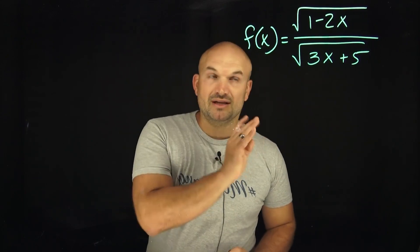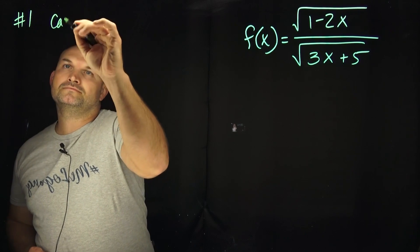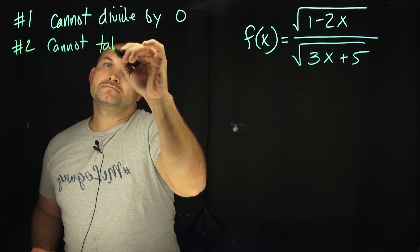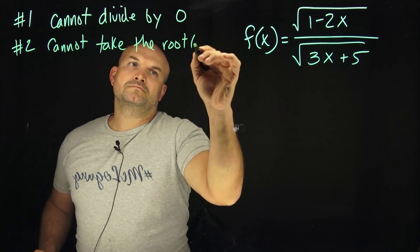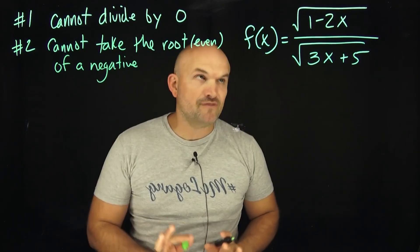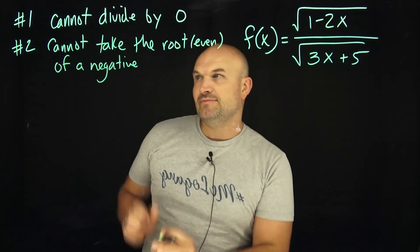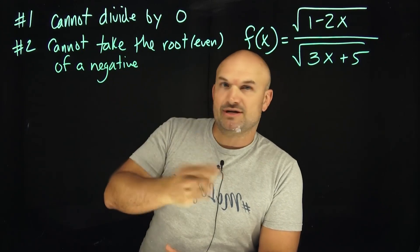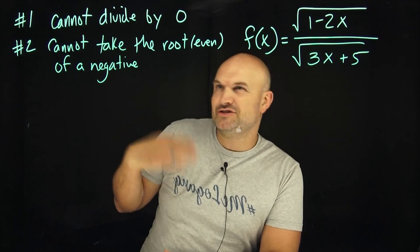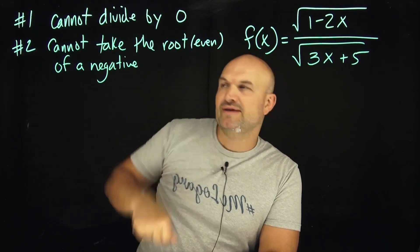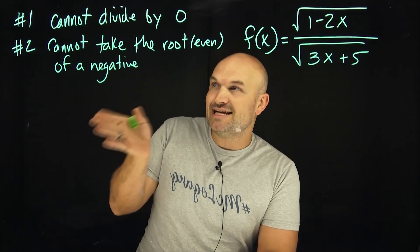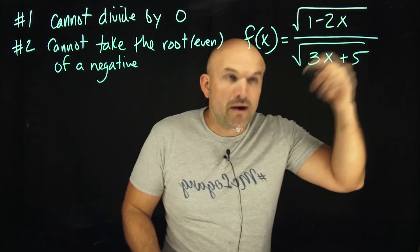There are a couple things we need to remember about restrictions on our domain. These are not the only restrictions on our functions, but for a function like this, those are going to be the two restrictions we have to focus in on. One, you cannot divide by zero — whatever makes the denominator equal to zero cannot be in our domain. The other one is you cannot take the even root of a negative. The fourth root, sixth root, eighth root all fall under this category, but you cannot take the square root of anything negative.